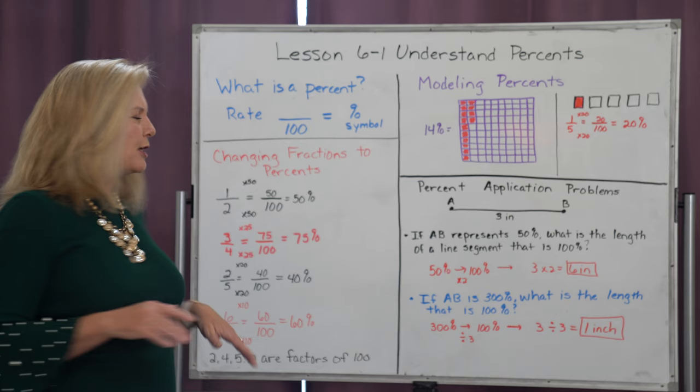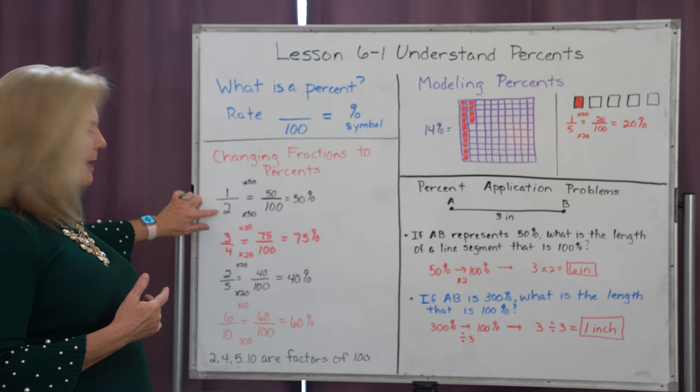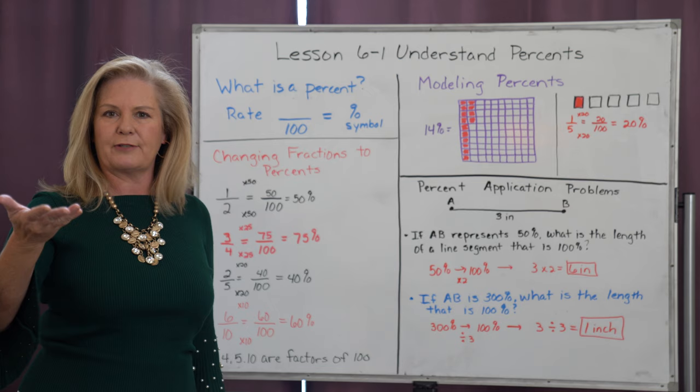So if I look at this fraction one-half and I want to change it to a percent, which means a comparison to a hundred, all I have to think is: what can I multiply that denominator of two by to get a hundred? Well, I know two times fifty is a hundred, and in math, whatever you do on the bottom, you have to do on the top.